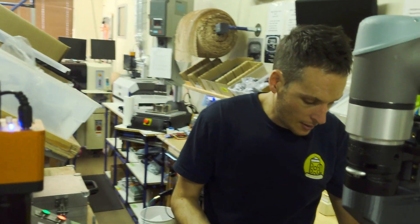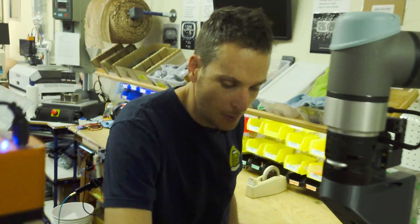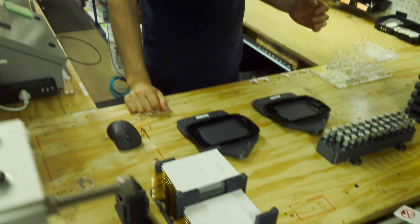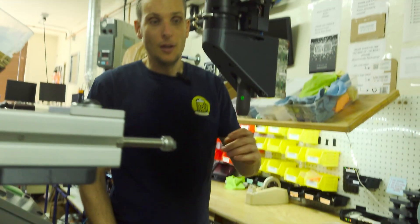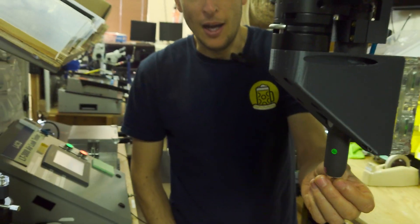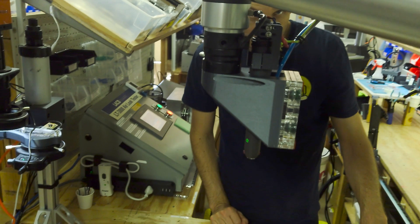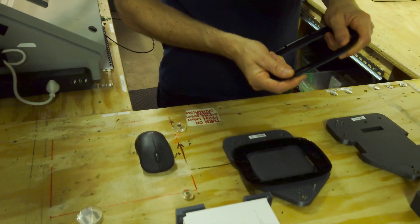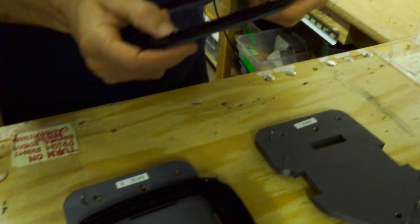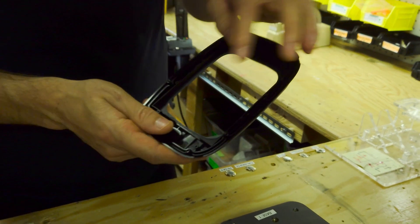And so the way, the steps that the robot's going to take to do that, first it's going to use this Corona treater, which shoots out ionized air at the end of it. And it's going to treat the surface of this glass reinforced nylon, so it's really strong, good plastic to use for marine electronics.